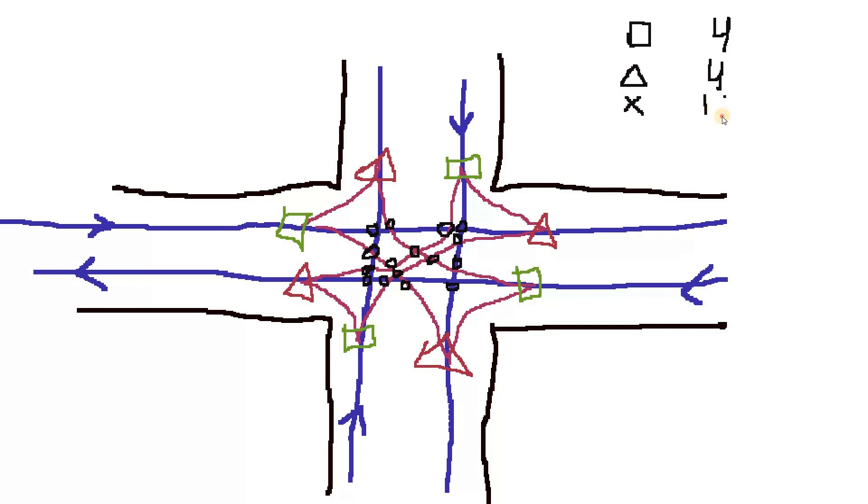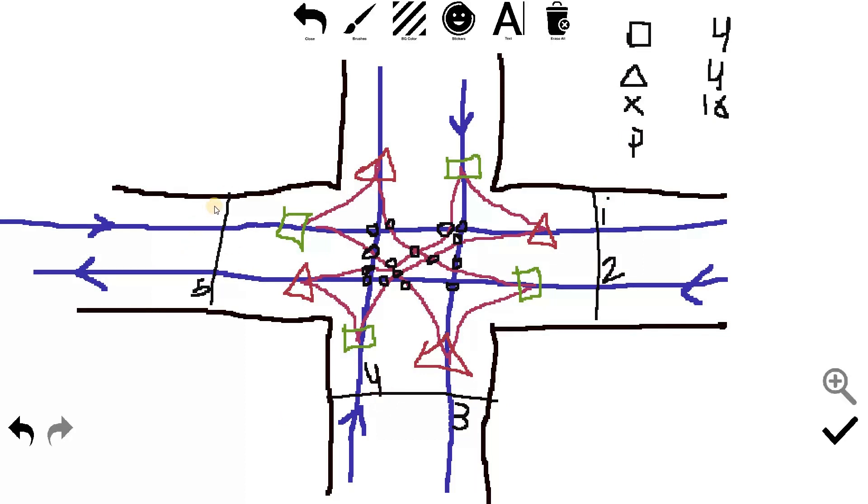And I will have eight pedestrian conflicts. I will write here: first pedestrian conflict, second pedestrian conflict. Then we have here third, fourth, fifth, sixth, seventh, eighth. We have eight pedestrian conflicts.